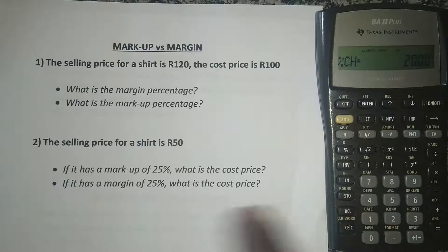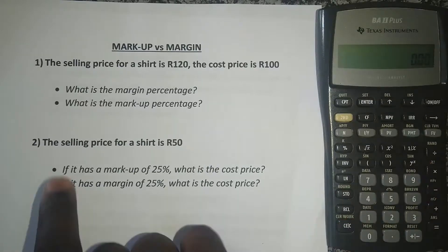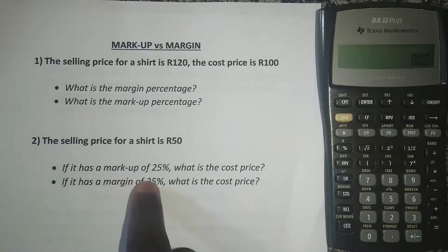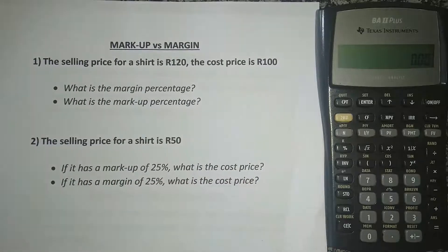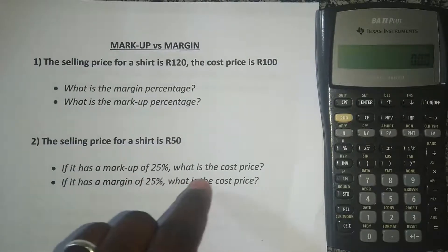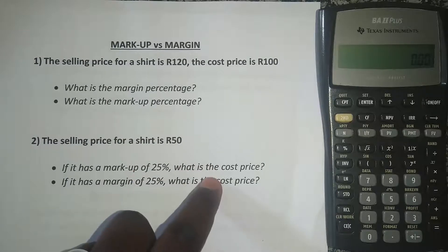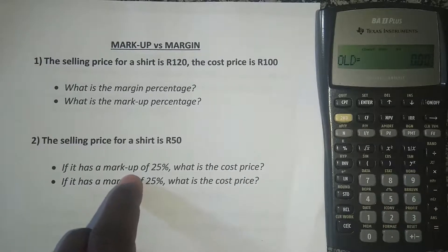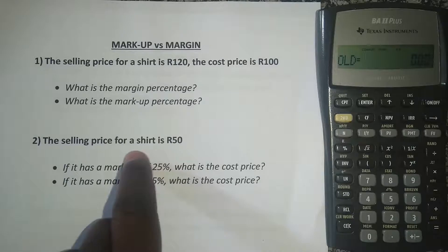Let's look at the second example. Let me reset my calculator. The second one tells us that the selling price for a shirt is 50 Rand. What we are asked here is: if it has a markup of 25%, what is the cost price? Remember in the first example we calculated margin and markup given the selling price and cost price. But here we are given the selling price and the markup or margin, and we are asked what the cost price is. The first question: if there's a markup of 25%, what is the cost price? So we are doing markup first — we press second function and then number five, the percentage change, because it's a markup.